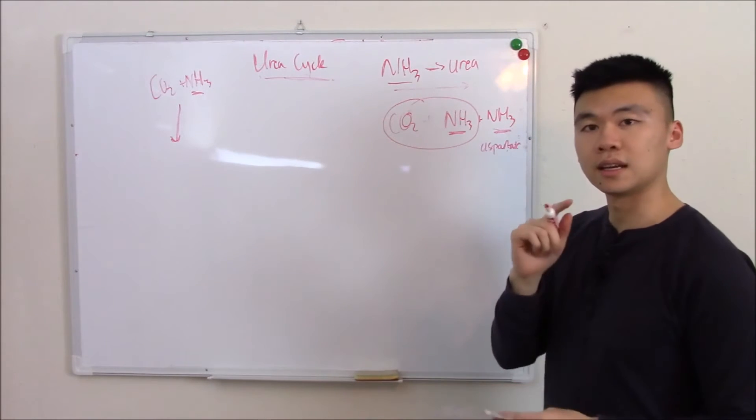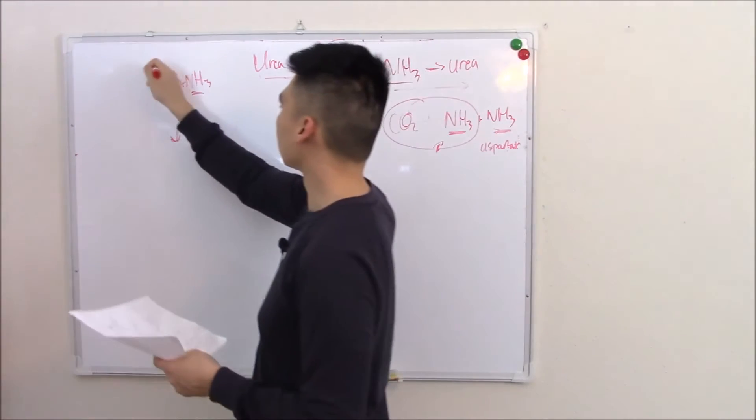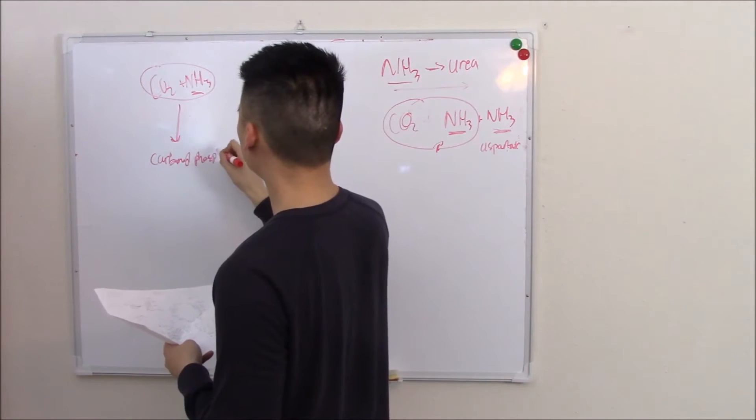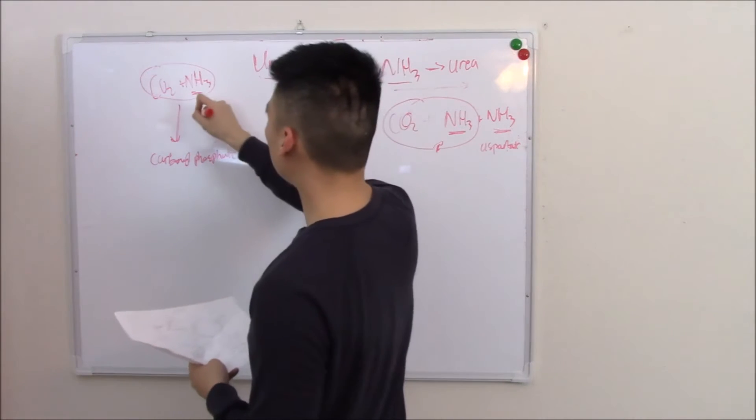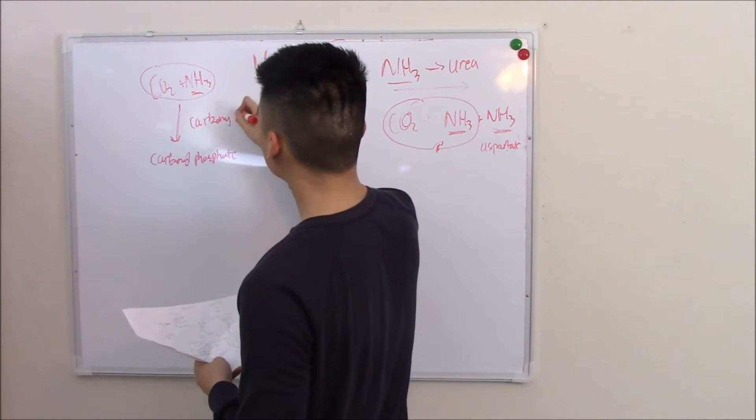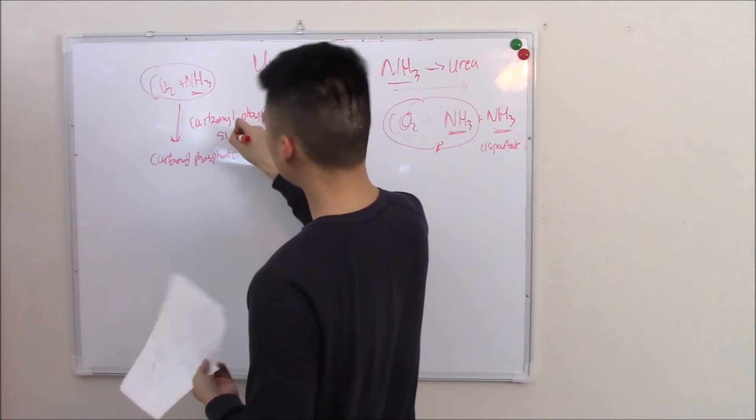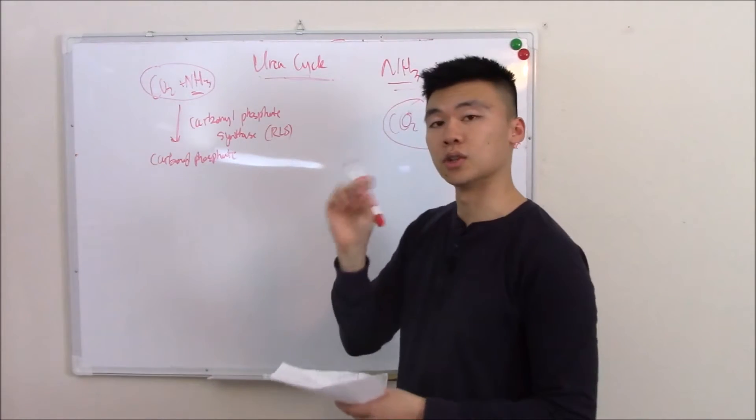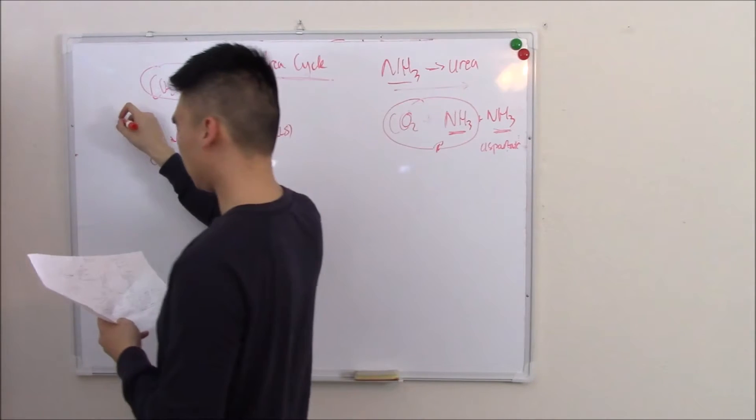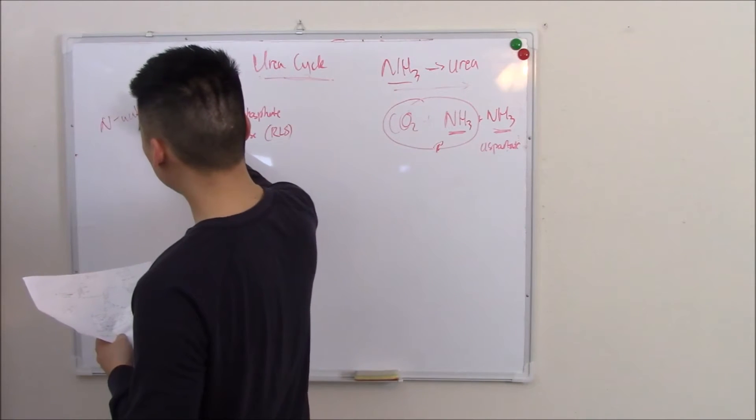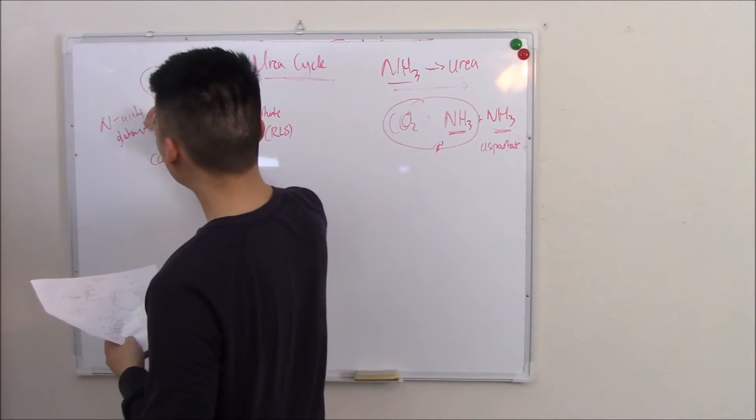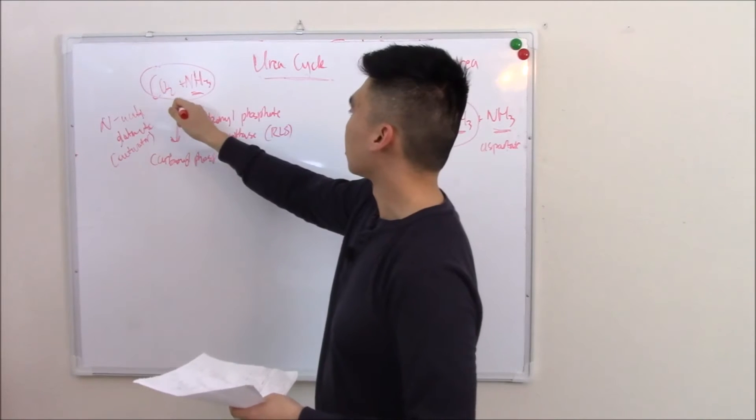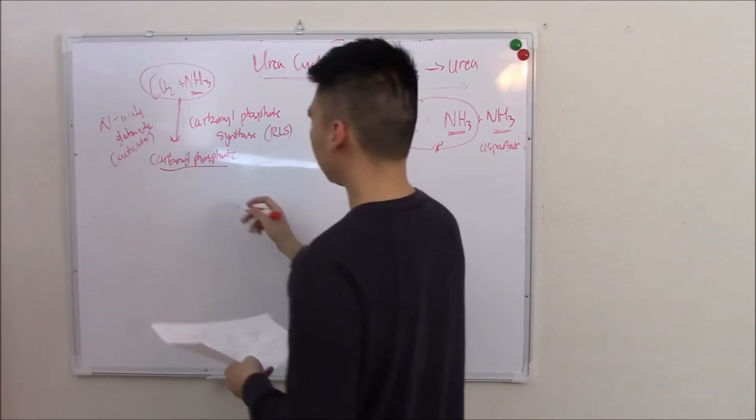You'll see that in a second, but first things first, we have this carbon dioxide and ammonia - this makes carbonyl phosphate via an enzyme called carbonyl phosphate synthase. Nice and easy. This is the rate-limiting step of the urea cycle, so know it well. It also needs a friend: N-acetyl glutamate, which is an activator of the urea cycle. So you have your starting waste, turn it to carbonyl phosphate.